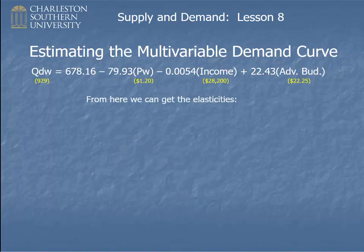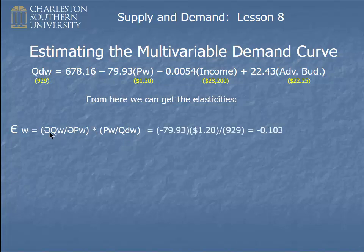From this we can get the elasticities. Here's how you do that. If you've viewed the multivariable elasticity lesson already, you know that own price elasticity is the derivative of the QDW equation with respect to the variable PW times the value PW divided by the value QDW. In this case, the derivative of the QDW equation with respect to the variable PW is just this coefficient right here. That's this number, minus 79.93,